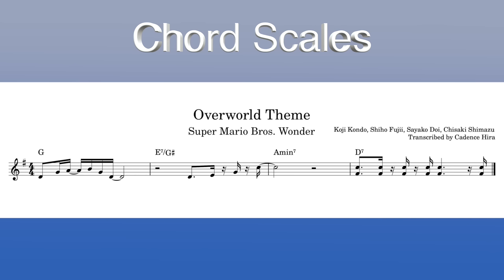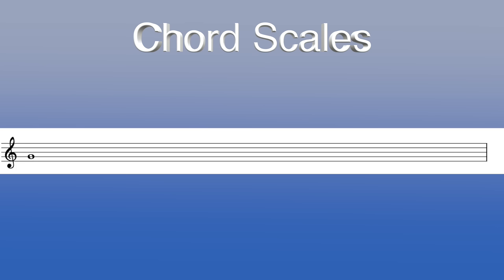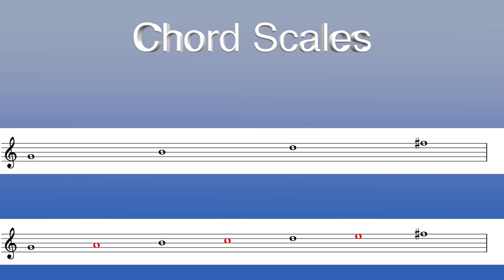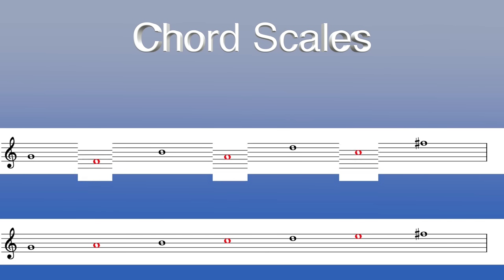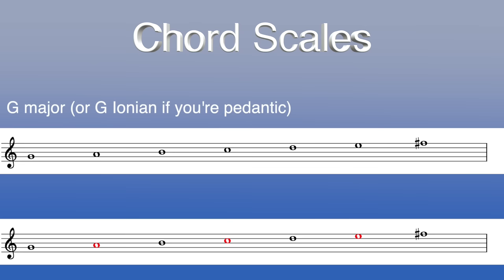Let's make some chord scales, starting with the first chord. To make a chord scale, we follow a few simple rules: first, find all of the chord tones — the root, third, fifth, and seventh. That gives us four notes, and to get the other three, we fill in the gaps with notes from the scale of the key we're in — in this case, G major. That gives us the G major chord scale, which makes sense since this is the G major chord and we're in the key of G major.